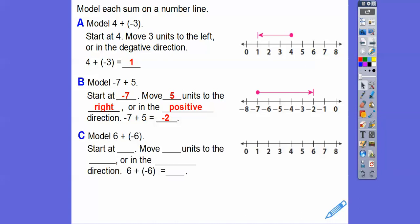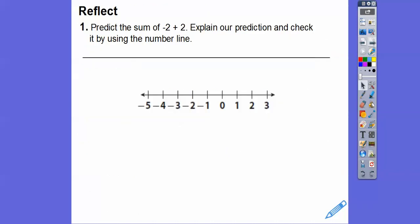Number lines work great with this. How about 6 plus negative 6? Let's start at 6, and then we're going to move 6 units to the left in the negative direction. 6 plus negative 6 takes us to 0. What if I said predict negative 2 plus 2 and explain your prediction, then check it by using a number line?